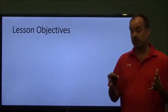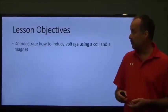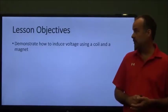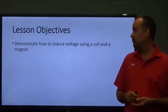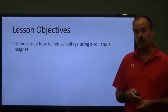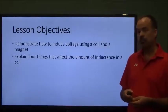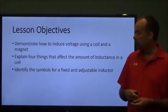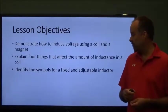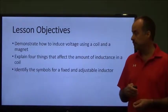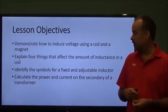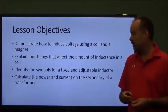The lesson objectives for this entire lesson: at the completion of this lesson you should be able to demonstrate how to induce voltage using a coil and a magnet, explain four things that affect the amount of inductance in a coil, identify the symbols for a fixed and adjustable inductor, and calculate the power and current on the secondary of a transformer.